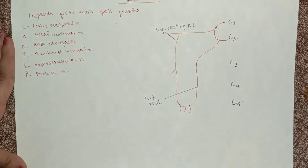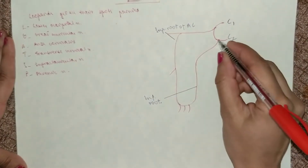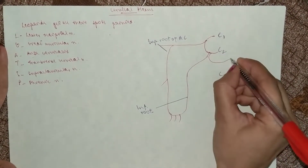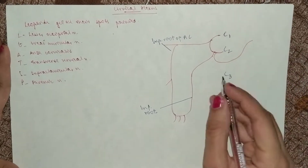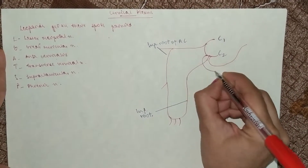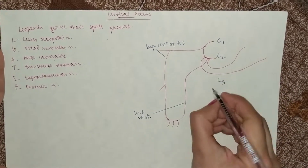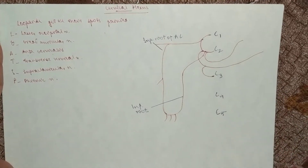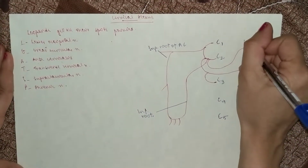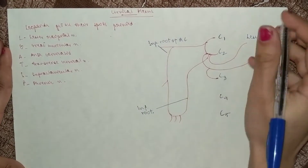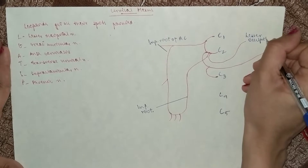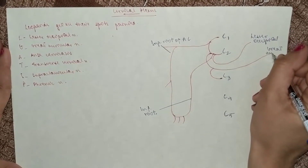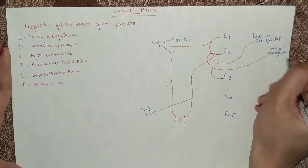There are two nerves that come from C2: the lesser occipital and the great auricular. C3 also joins the great auricular nerve. So here you've got the lesser occipital — the 'Leopard' — and here you've got the great auricular.